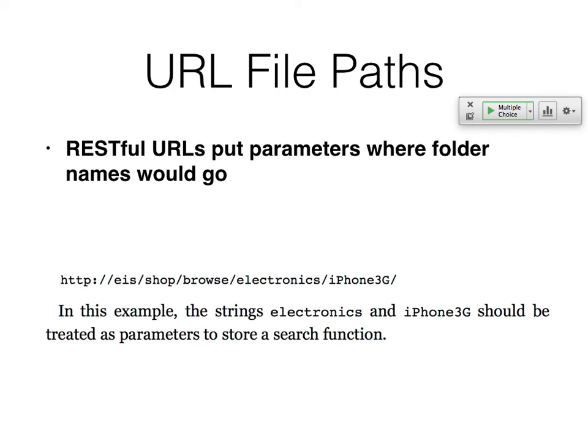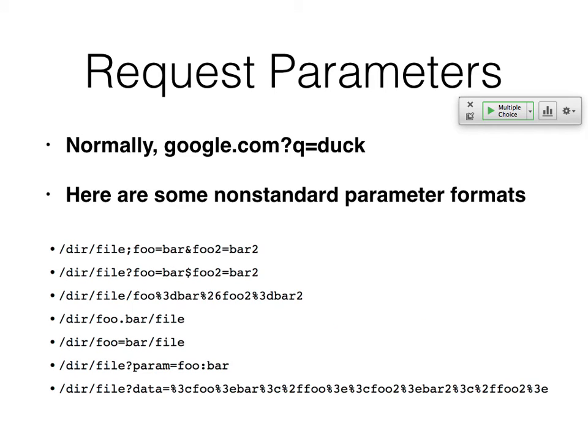Remember, RESTful URLs put things that look like folder names but are really parameters — that's another thing to consider when modifying them. The standard technique is like google.com?q=duck, but you can put parameters other ways: with a semicolon, percent-encoded characters like %26, percent 3, and all that. You can have anything the coder wants — they can take that data and cut it up any old way. If it's not something pretty common, your automated processes will be lost and you're going to have to manually mess with them.